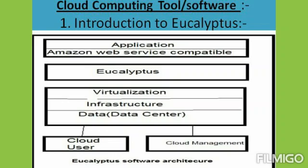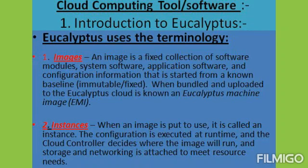In another word, you can say that selecting a value or space or area of a cloud is called an image. The second terminology is instances. When an image is put to use, it is called an instance. The configuration is executed at runtime, and the cloud controller decides where the image will run, and storage and networking are attached to meet resource needs.